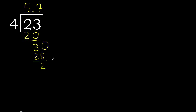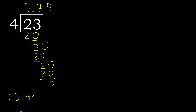There is no next number, therefore complete — always complete with 0. Bring down 20. 4 multiplied by which number? Multiplied by 5 is 20. 20 minus 20 is 0. Therefore finish. 23 divided by 4 is 5.75.